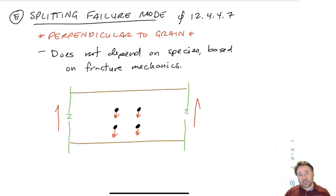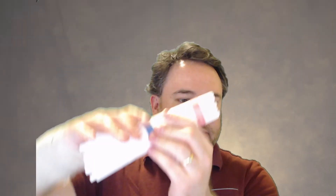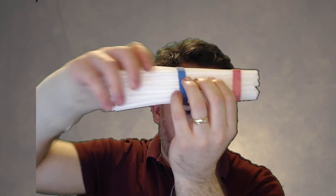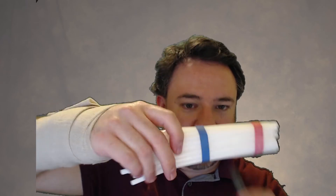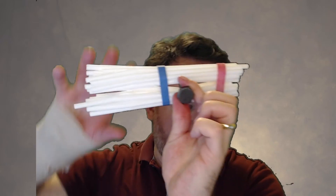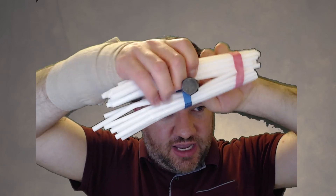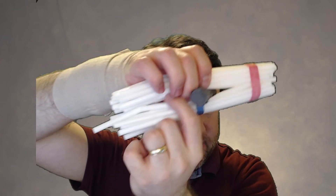We know from when we talked about connections in general that this is a very bad way to load a piece of wood. Because if we have our straws — if my fingers here are the bolts and I pull down, it's going to open up this crack. Pulling down on that bolt is going to pull all of the stuff on the bottom down, which opens up cracks on both sides.